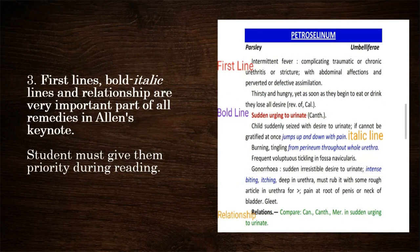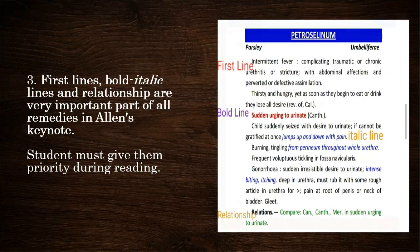Third, first-line, bold, and italic lines and relationships are very important parts of all remedies in Allen's Keynote. Students must give them priority during reading. All these important parts are presented with colour in this new edition of the book.